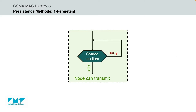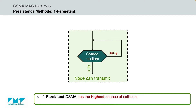To summarize, here is the flow diagram for the one-persistent CSMA method. The transmitting node continuously senses the shared transmission medium. If it is idle, it transmits the frame immediately; else it continues to listen until the medium becomes idle and then transmits immediately. One-persistent CSMA has the highest chances of collision because two or more nodes may find the shared transmission medium idle and transmit their frames immediately. One-persistent CSMA is used in CSMA-CD systems, including Ethernet.